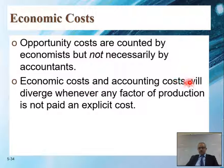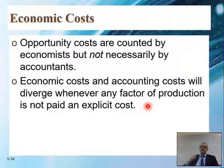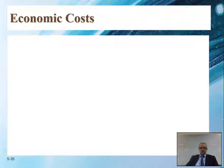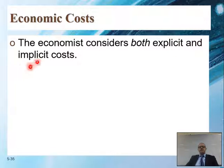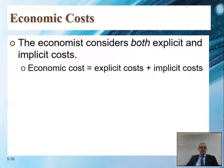Economic costs and accounting costs will diverge whenever any factor of production is not paid an explicit cost. They will be the same only if we actually pay that cost. Economists consider both explicit and implicit costs. Explicit is what accountants track — the out-of-pocket payments. Implicit is what economists additionally count. So, economic cost equals explicit plus implicit.